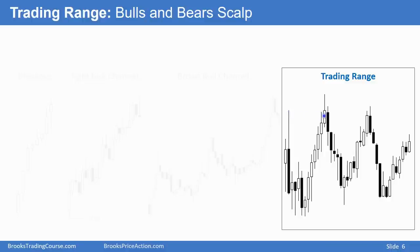Bulls take profits at highs, bears sell at highs, bears take profits near the low in the bottom third, and bulls buy in the bottom third — buy low, sell high, scalp. Both the bulls and bears are confident of only one thing: that the market's not going to break out and that it will continue to reverse. They both know eventually it will break out, but if they're trading it in a trading range, they're going to be taking quick profits — buy low, sell high, scalp.